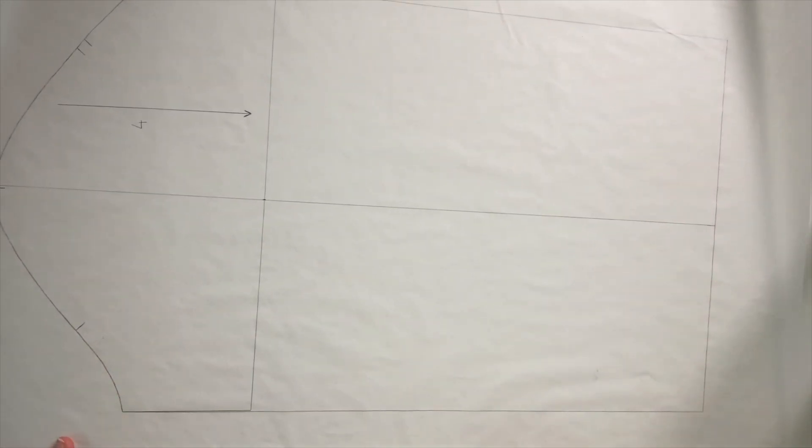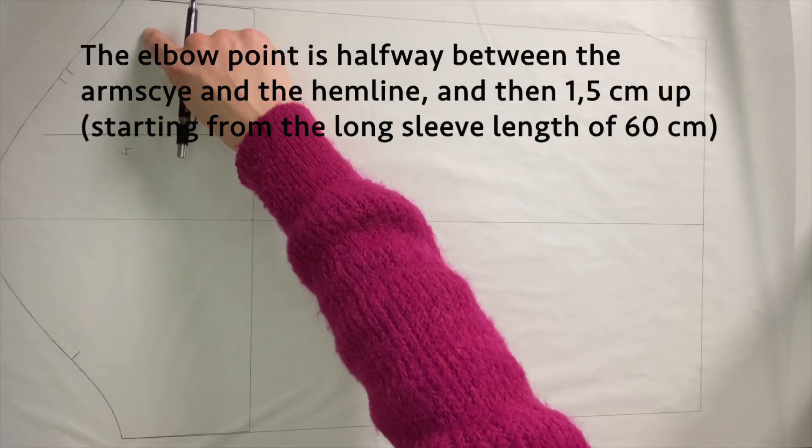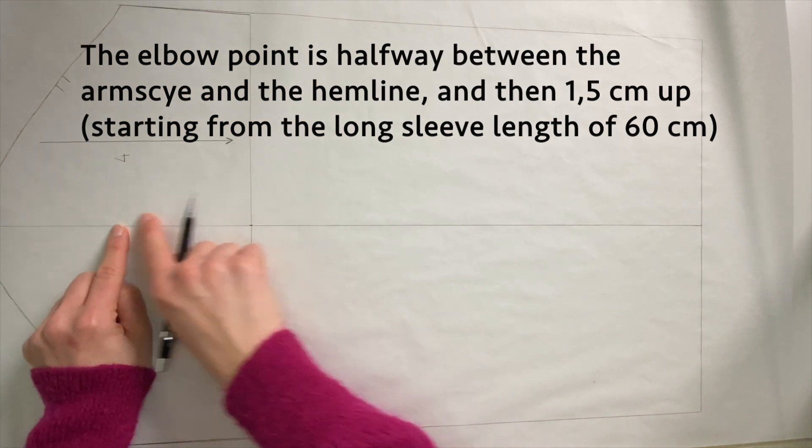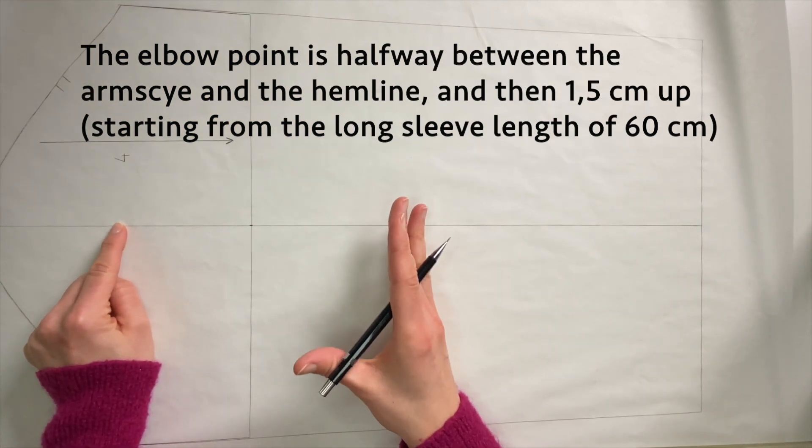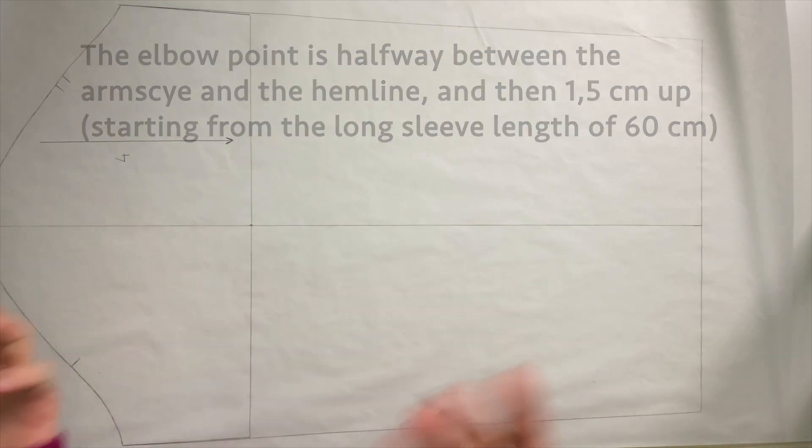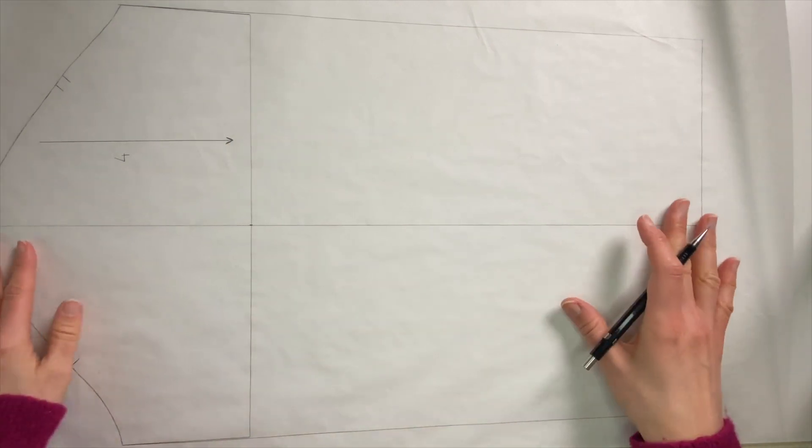You can also add a little marking somewhere in the middle for when you start sewing the sleeve. You can also look for the elbow point. The elbow point you can find by connecting the ends of the arm side. You measure this distance, you divide it by two and then you go 1.5 centimeter up.